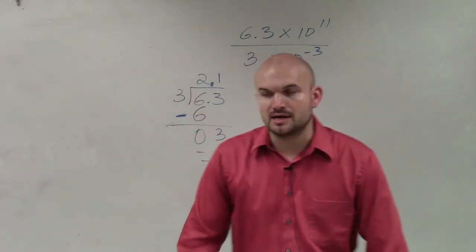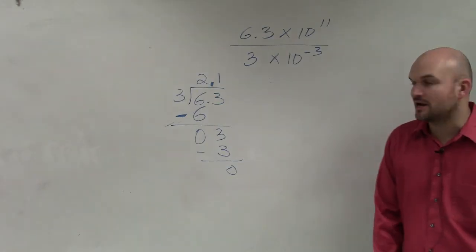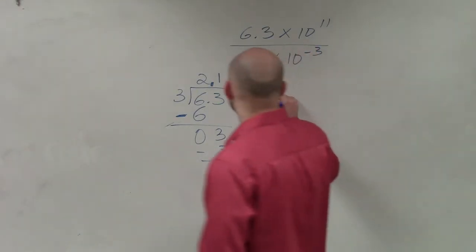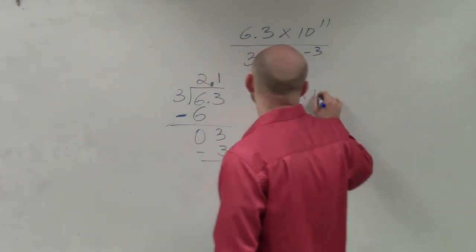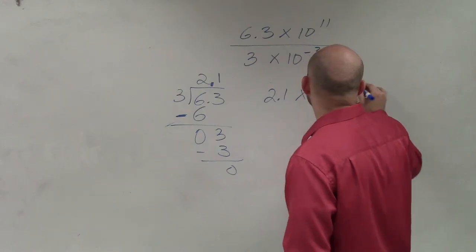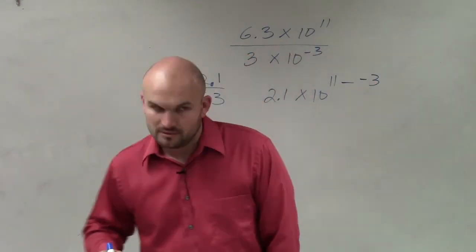But then there are infinitely many 0's, and that's just going to be our answer. So 6.3 divided by 3 is just going to be 2.1 times 10. Now, remember, we're subtracting our exponent, so it's going to be 11 minus a negative 3, right?